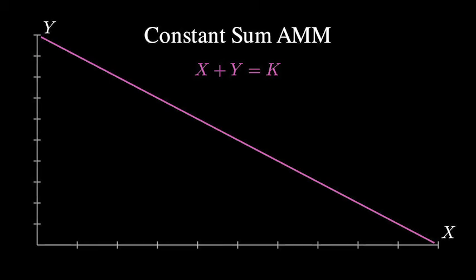However, this doesn't work for real life stablecoins very well, because these coins usually fluctuate naturally around their pegs and occasionally even lose pegs. Thus, with constant sum, arbitrageurs would quickly drain the pool of the less valuable token.